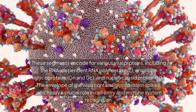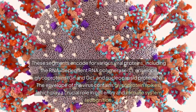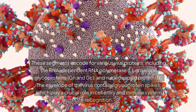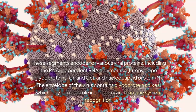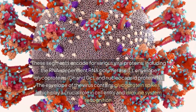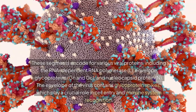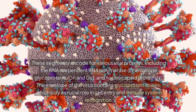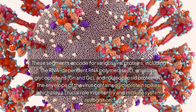These segments encode for various viral proteins, including the RNA-dependent RNA polymerase (L), envelope glycoproteins Gn and Gc, and nucleocapsid protein (N). The envelope of the virus contains glycoprotein spikes, which play a crucial role in cell entry and immune system recognition.